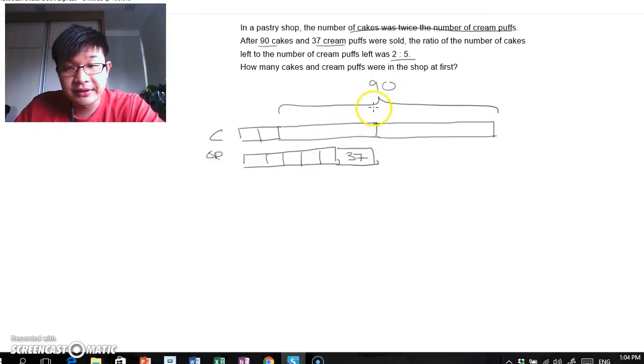Now, if we were to look at this part here, just the first unit, we will know that there is a 37 here. If there is a 37 here, there will be also a 37 here.